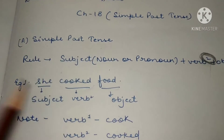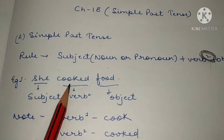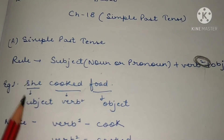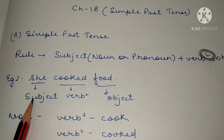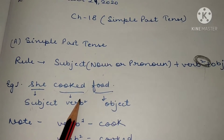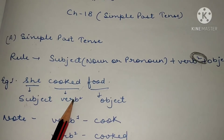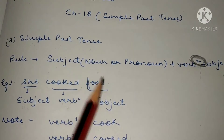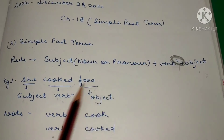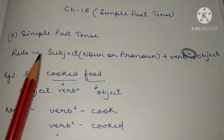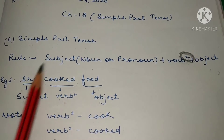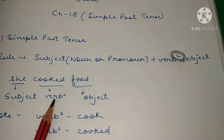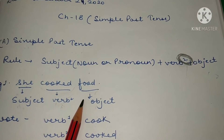Now look at this example: 'She cooked food.' The subject is 'she,' which is also a pronoun. 'Cooked' has '-ed' added, which means it is verb ki second form. 'Food' is your object. If we check the rule: subject — yes; verb ki second form — yes; object — yes. The rule is satisfied.